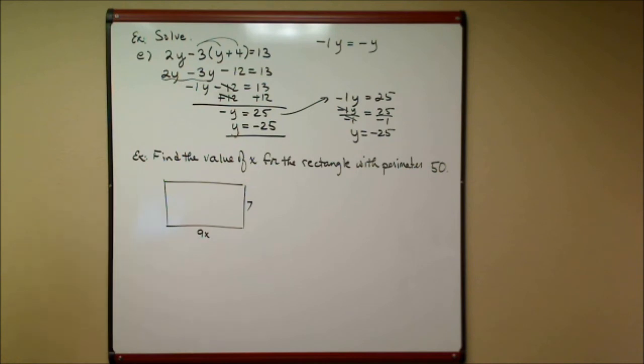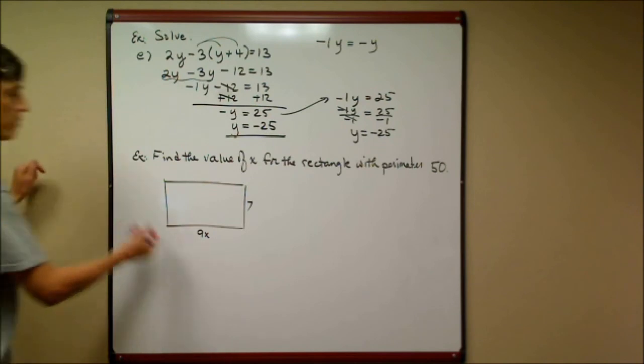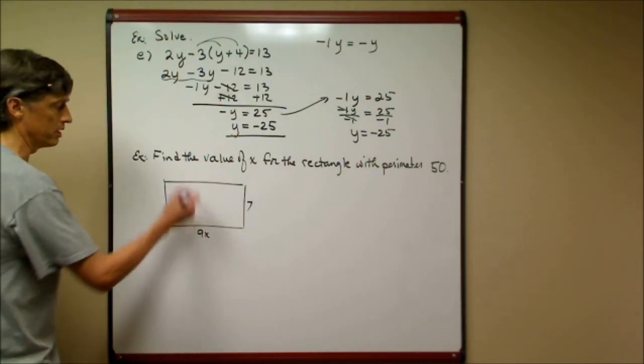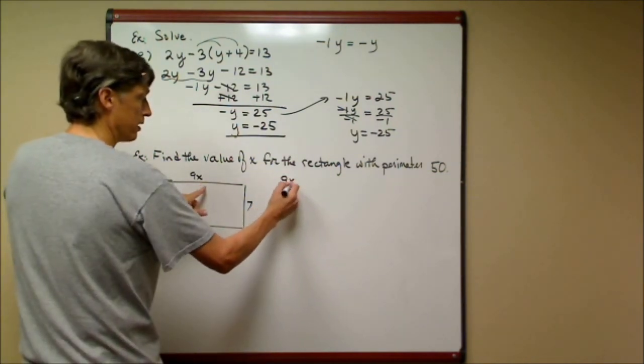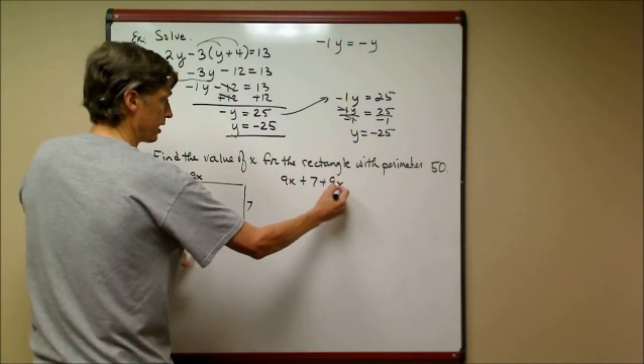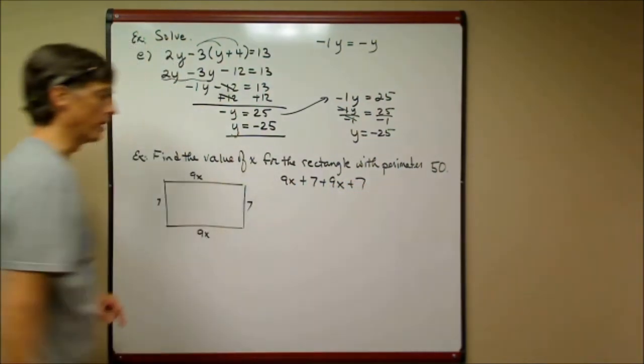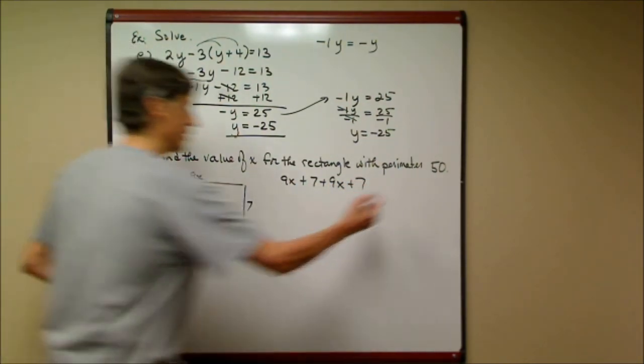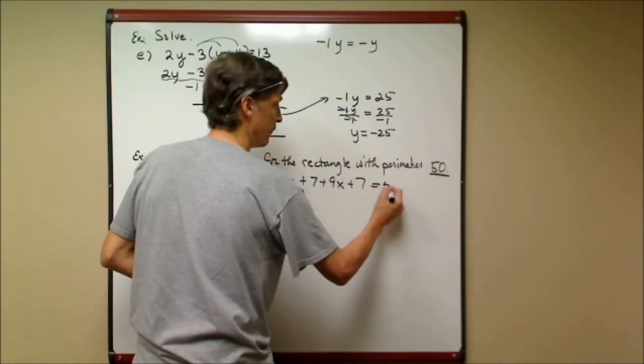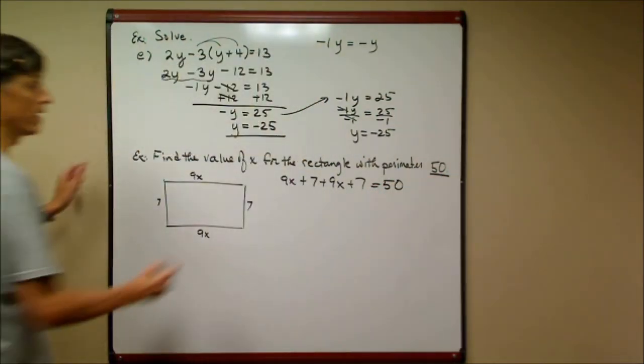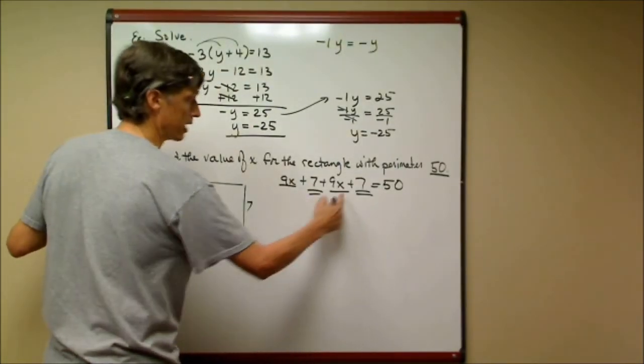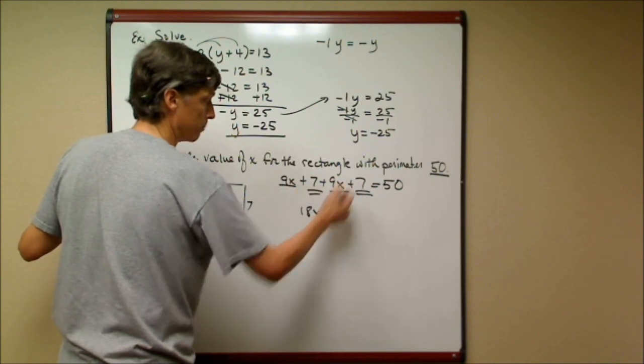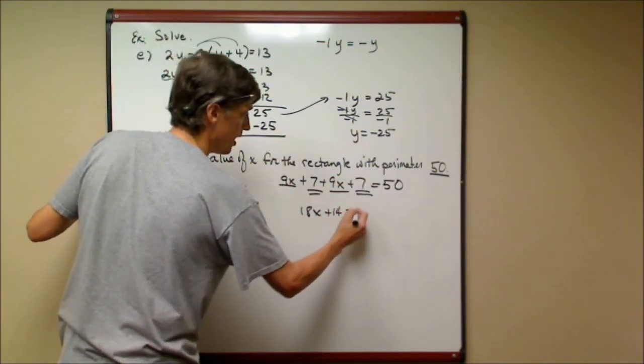My last example is a little of an application. It says, find the value of x for this rectangle with perimeter 50. Now perimeter, remember, is when you add up all the sides. So if this is 9x, this is 9x, and if this is 7, then this is 7. So I have 9x plus 7 plus 9x plus 7. That's the perimeter. I add up the four sides, I get the perimeter, but they tell me that the perimeter in this problem is 50, so this must equal 50. I combine like terms. I have like terms here and here. 9x and 9x is 18x. Plus 7 and plus 7 is plus 14, and that equals 50.